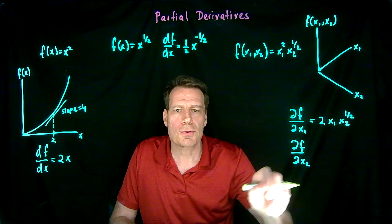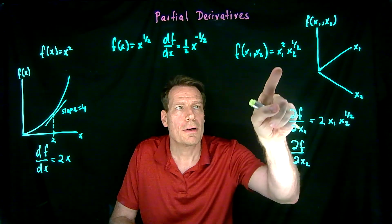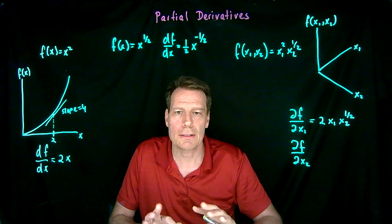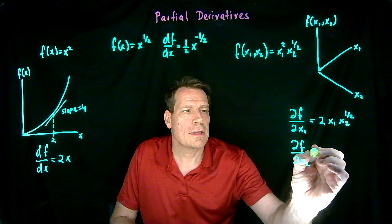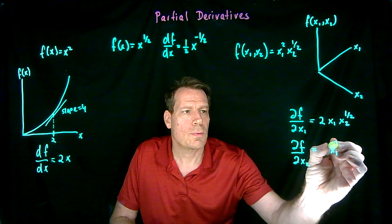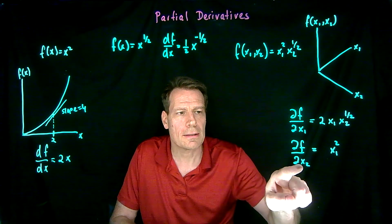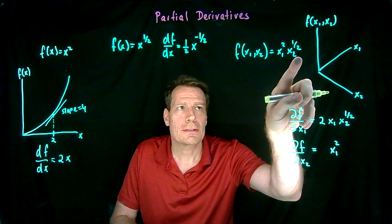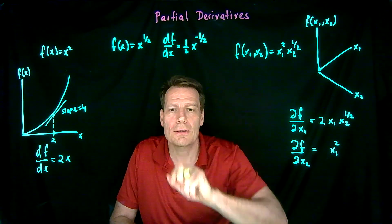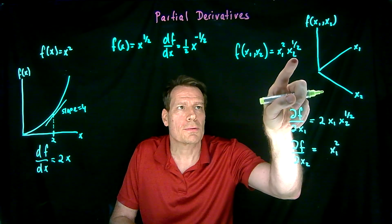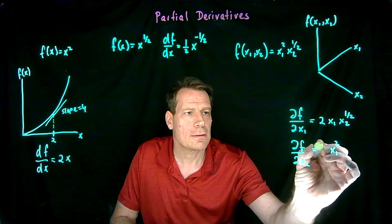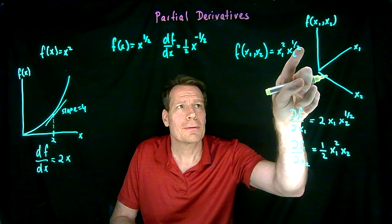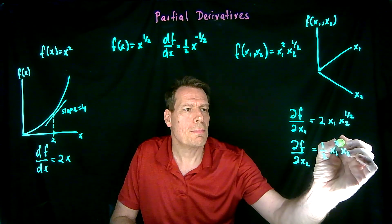If we take the derivative with respect to x2, we do exactly the same thing, only this time we hold x1 fixed just as if it was just a number — we just leave it alone. So we would still have x1 squared; nothing happens to that because we're taking the derivative with respect to x2. But we are going to do something to the x2 term: we move the 1 half up front times x2 to an exponent where we subtract 1 — so minus 1 half.